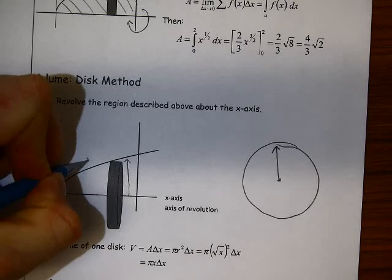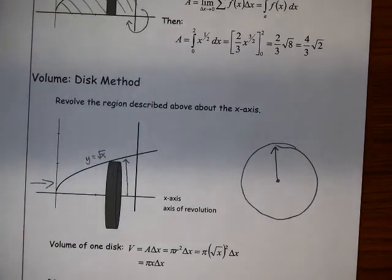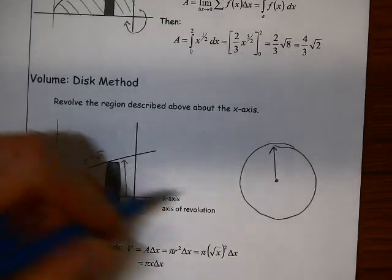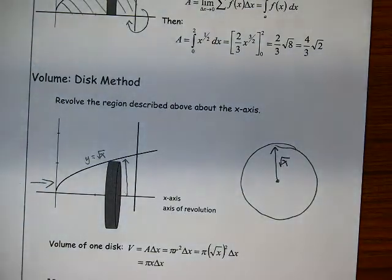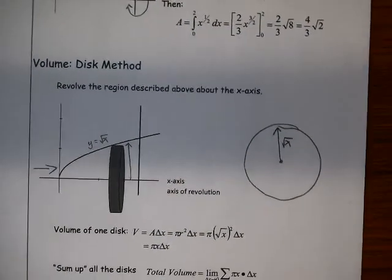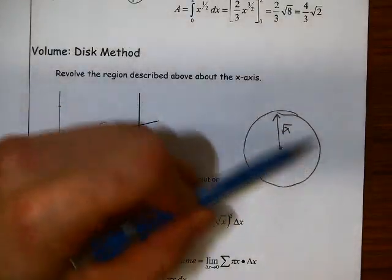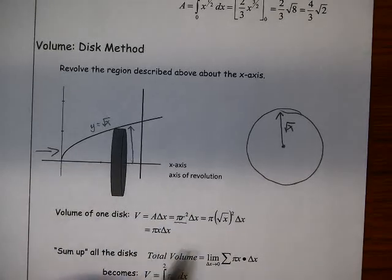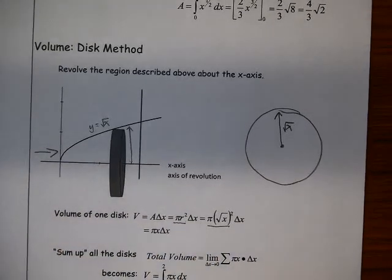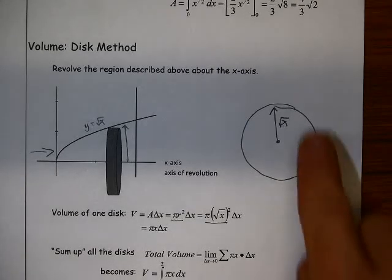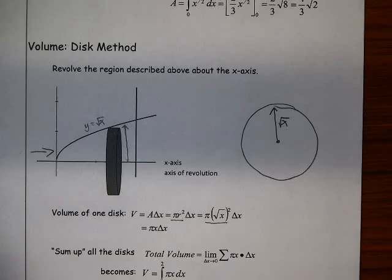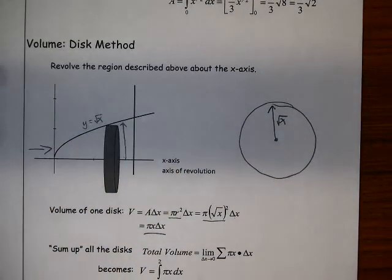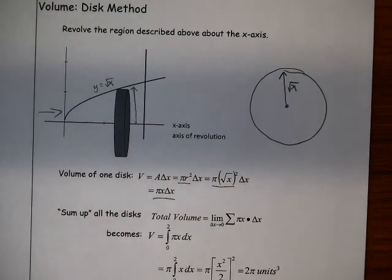This distance right here is our radius of that circle. This height here is defined by the square root of x, so that's this distance right here, so that is also our radius, the square root of x. So the area of this circle is pi r squared. Pi times the square root of x squared is the area of one of those circles, and each one has a thickness of delta x. So the volume of one disk is pi times x times delta x.